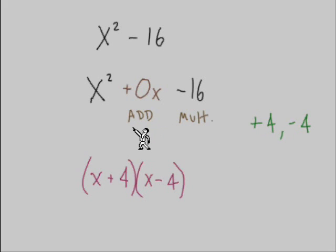And so we would take those numbers and drop them into our answer. Remember, that's what we do when our leading term is just an x squared. We don't have a 2, a 3, or any higher number on the x squared. We can take those numbers and just drop them right in. And there's our answer, x plus 4 times x minus 4.